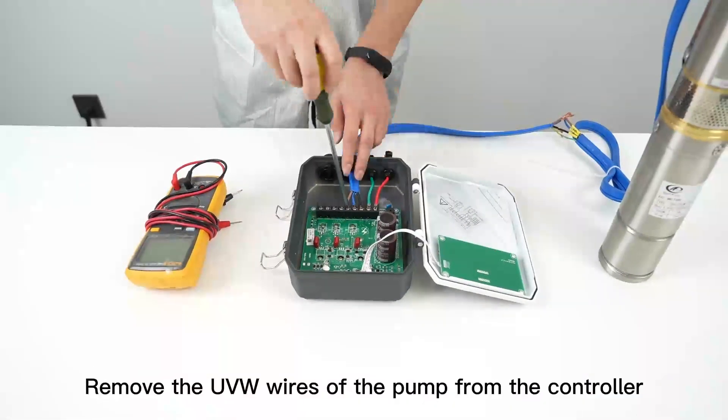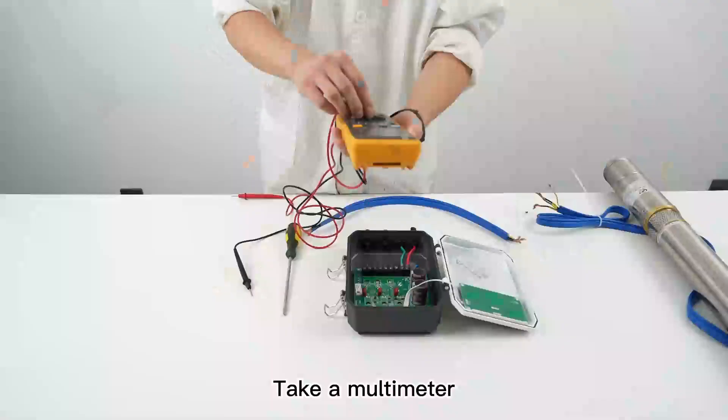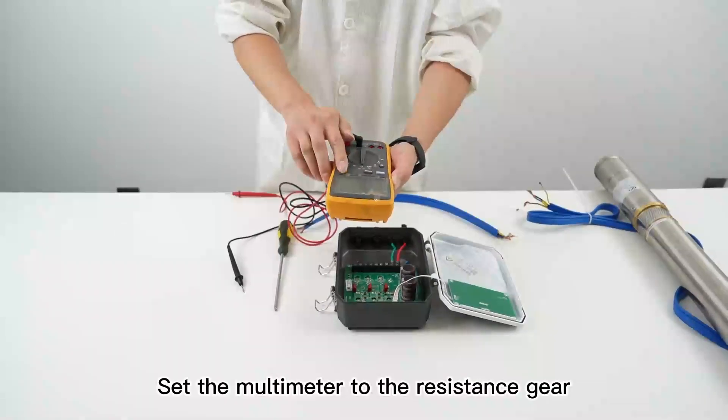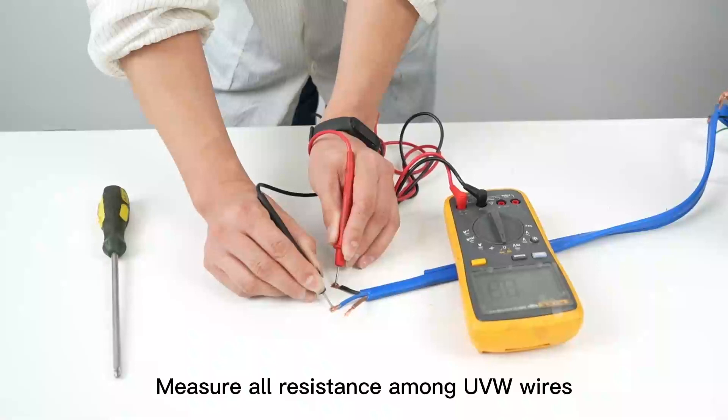Remove the UVW wires of the pump from the controller. Take a multimeter and set it to the resistance gear. Measure all resistance among the UVW wires.